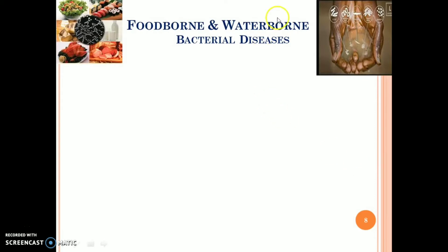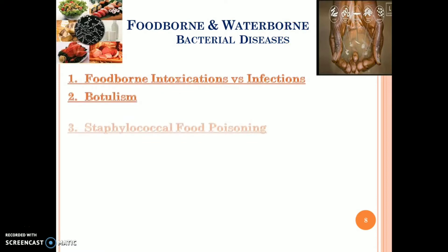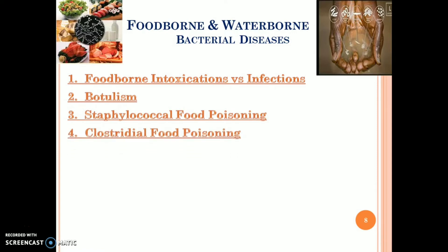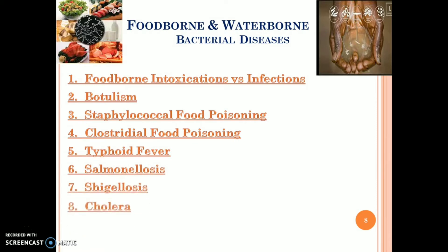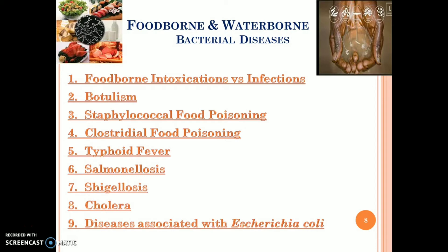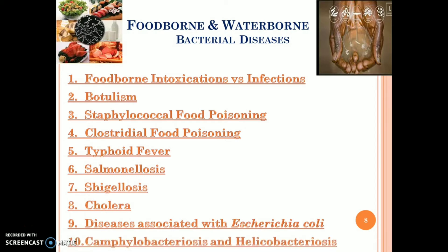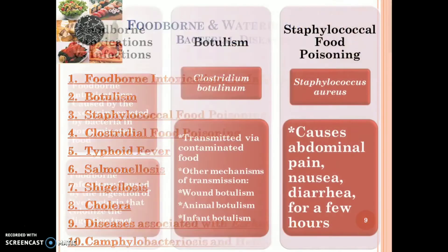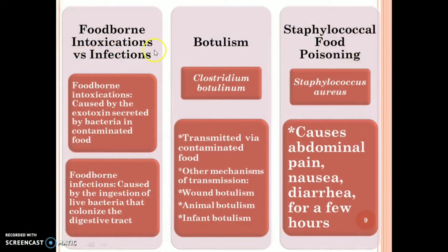The next topic is foodborne and waterborne bacterial diseases. The categories include: botulism, staphylococcal food poisoning, clostridial food poisoning, typhoid fever, salmonellosis, shigellosis, cholera, diseases associated with Escherichia coli, campylobacteriosis, and helicobacteriosis. Foodborne intoxications are caused by exotoxins secreted by bacteria in contaminated food, whereas foodborne infections are caused by the ingestion of live bacteria that colonize the digestive tract.